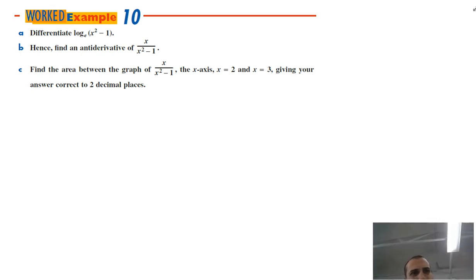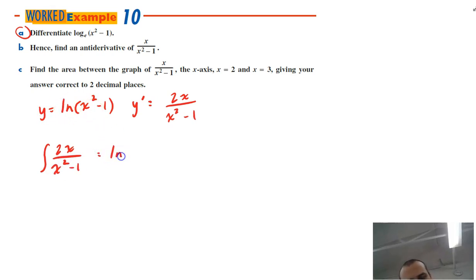So first step is going to be differentiating this thing. So if y equals ln x squared minus 1, then y dash equals the derivative of that, 2x over the function x squared minus 1. So if we know that, then we can say that the integral of 2x over x squared minus 1 is equal to ln x squared minus 1 plus c.